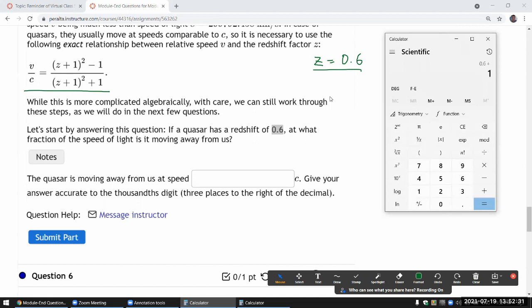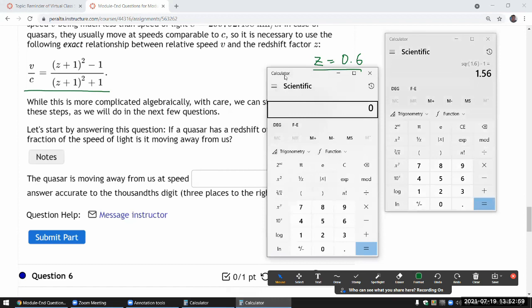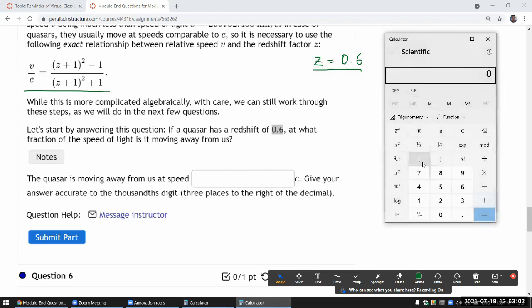So the numerator first. I am going to use the parenthesis tool in my calculator. If I didn't have parenthesis tool, then this is what I would do. I would do what's inside the parenthesis first, z plus 1. So 0.6 plus 1, get an equal sign. So 1.6, yeah, that's 0.6 plus 1. Square that. Okay, and then subtract 1. So minus 1. And then hit equal sign. Make sure that makes sense. 1.56 makes sense as square of 1.6 minus 1. So I'm going to save that on that calculator.